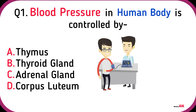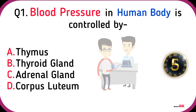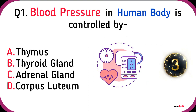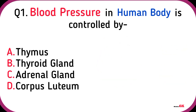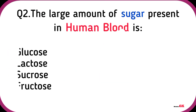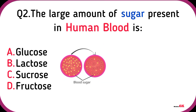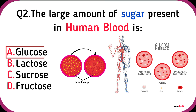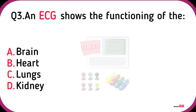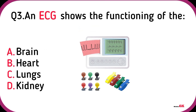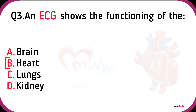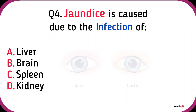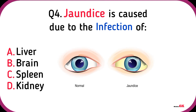Blood pressure in the human body is controlled by the adrenal gland. The large amount of sugar present in human blood is glucose. ECG shows the functioning of the heart.